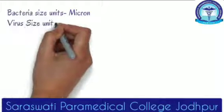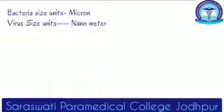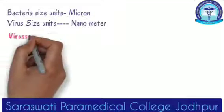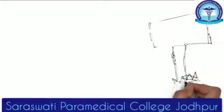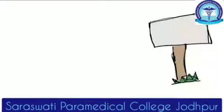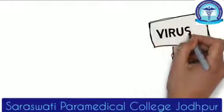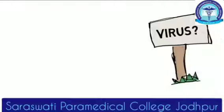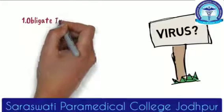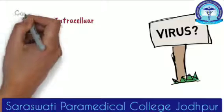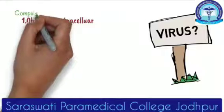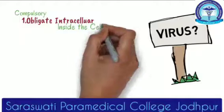The bacteria size is in microns while the virus is in nanometers, so it is very much smaller than the bacteria. Now, what is a virus? First of all, they are obligate intracellular. Obligate meaning is compulsory and intracellular means inside the cell. So, the virus needs a compulsory cell to grow or replicate.